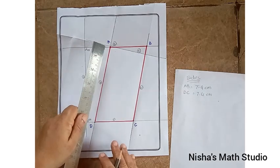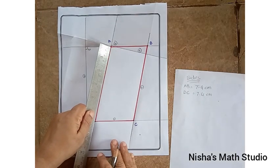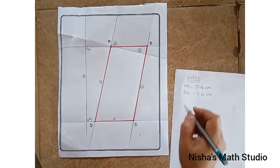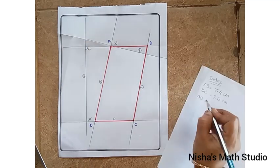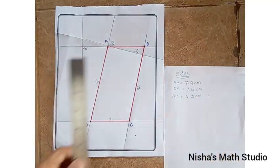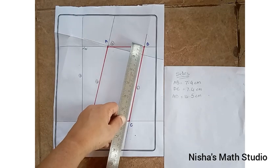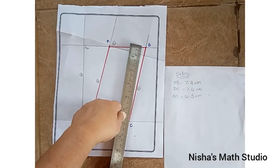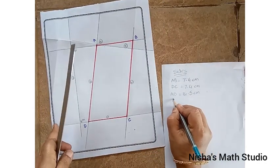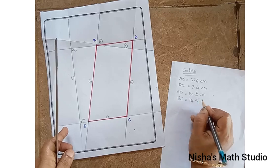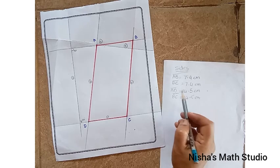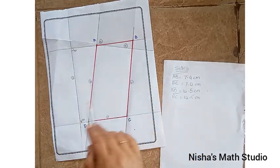Now, let's measure AD. In this case, AD has come 14.5. So, AD will be equal to 14.5 and we have to measure BC now. BC is also, yes, it is also 14.5. So, BC is 14.5. We have seen that AB and DC, AD and BC are opposite sides are equal.